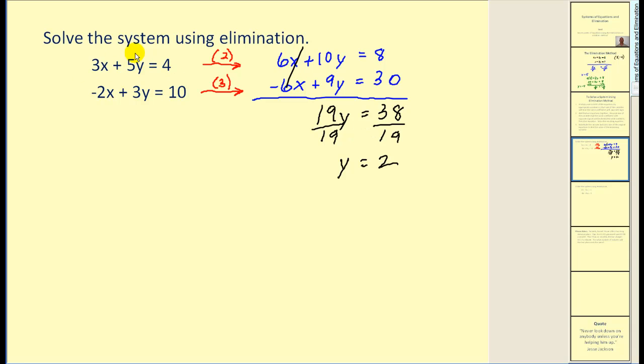We're going to take this value, sub it into one of these equations, and solve for x. I'll use the first equation. We have 3x plus 5y, but we now know y is 2, so that would be a 10 equals 4. Subtracting 10 on both sides, dividing by 3, we have x equals negative 2. Therefore, our solution to this system would be x equals negative 2, y equals positive 2. We can classify the system as consistent and independent.